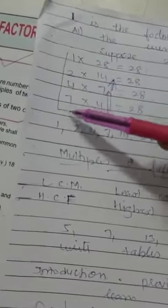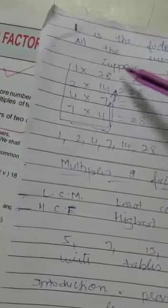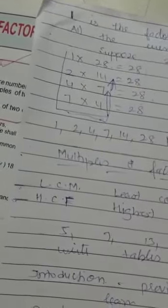1, 2, 4, 7, 14 and 28. These are all the factors of 28.